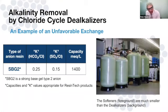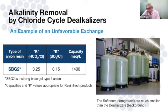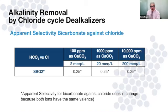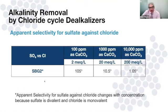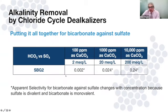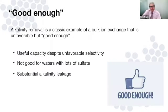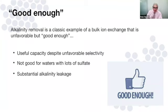Alkalinity is our last example, with unfavorable K values. The dealkalizers in this system photo are much larger than the softeners because the capacity is lower. Bicarbonate versus chloride shows no change in apparent selectivity as TDS changes, since it's a monovalent-to-monovalent exchange. Sulfate does show a big change due to its divalent-to-monovalent relationship, greatly favoring sulfate at low concentrations. Overall, this resin does not like bicarbonate compared to sulfate, but it's good enough — we get reasonable capacity, though not for waters with lots of sulfate, and there's always some alkalinity leakage.